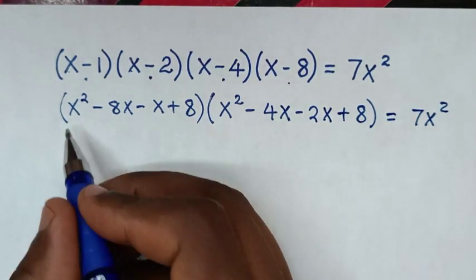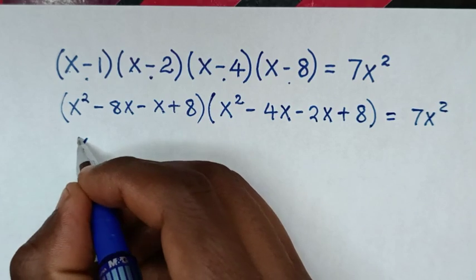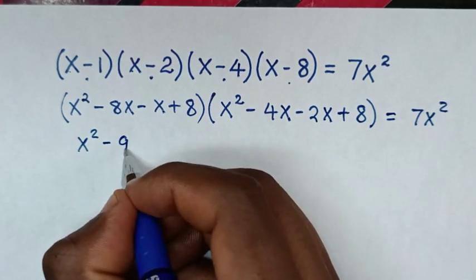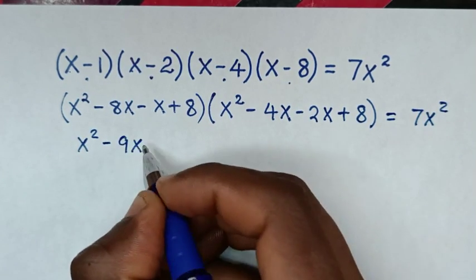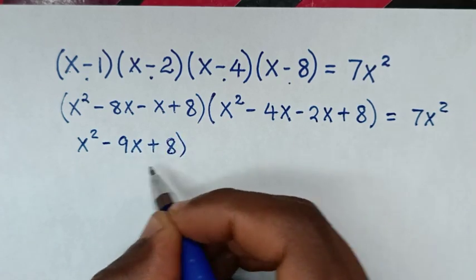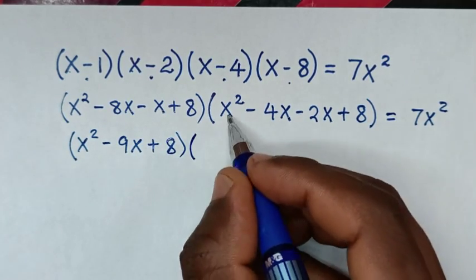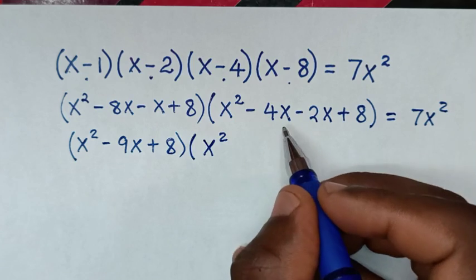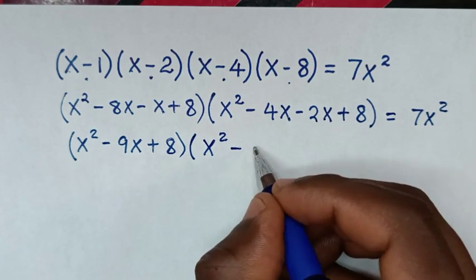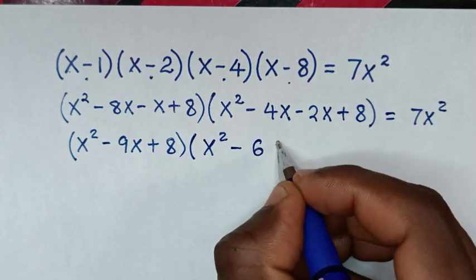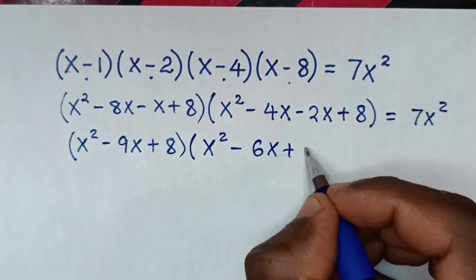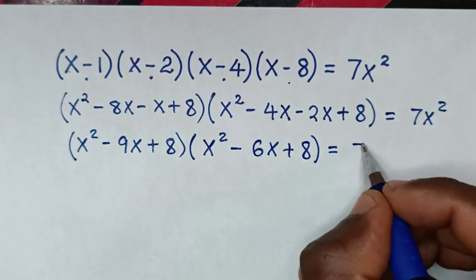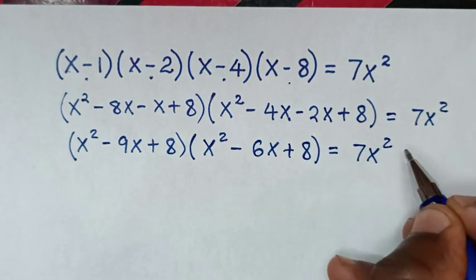Then in the next step, it will be x squared minus 9x plus 8, bracket, times x squared minus 6x plus 8, bracket, is equal to 7x squared.